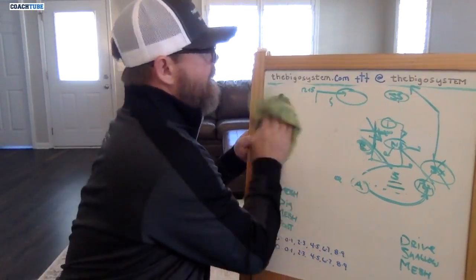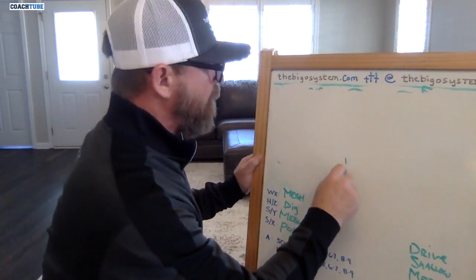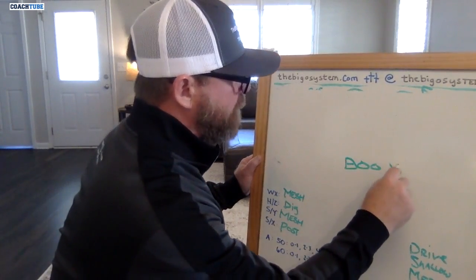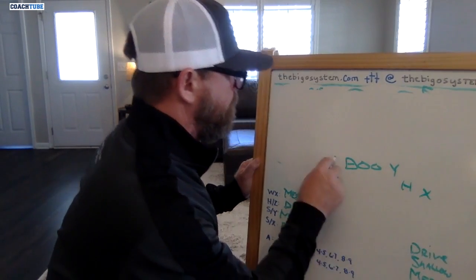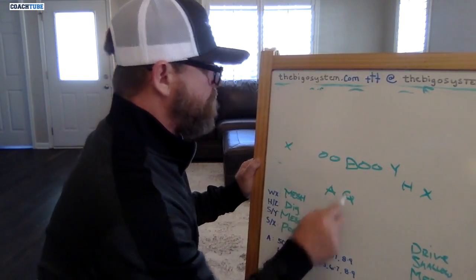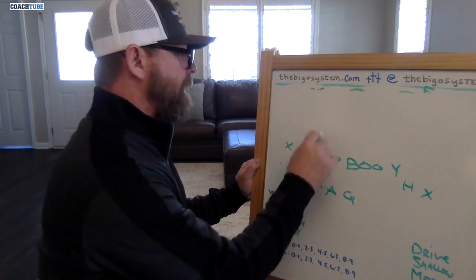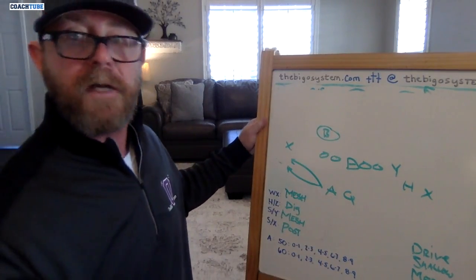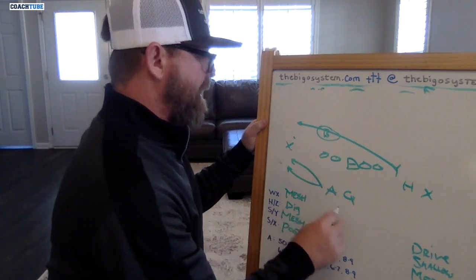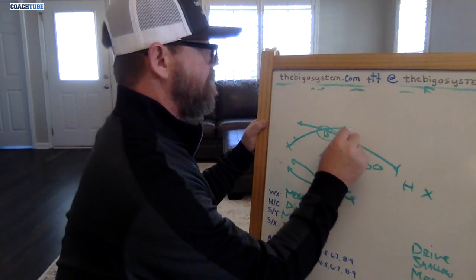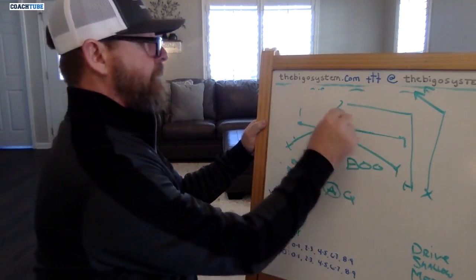If you've got mesh pyramid out of 3x1, and again, you pick your personnel group. Let's go with a 12 personnel grouping set right now. Let's go with a bunch deal. I'm going to put the back away from the first look into the boundary. Again, that makes this the first look. The slot or Y becomes the first look. The X to the side of the back sets it and becomes the third look. Still got your H. Now you've got your wind post.